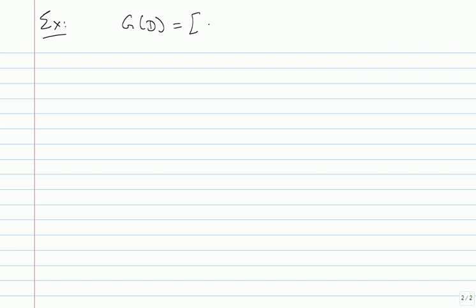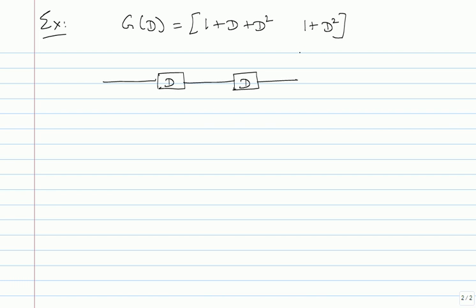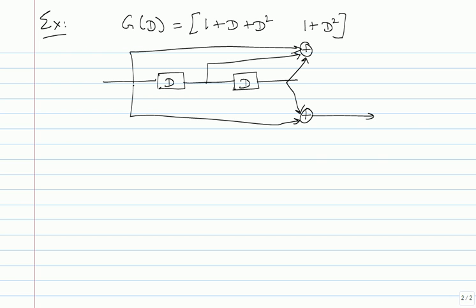I'll take G(D) to be [1 + D + D², 1 + D²], okay? This is my generator matrix description. From here I can go very easily to the actual encoder — I have two D flip-flops because D² is the maximum term. The rate of this encoder is 1/2. You will have two XOR gates: the first XOR gate is connected to the input and both state bits, and the second one is connected to the input and one of the state bits, giving two outputs V0 and V1.